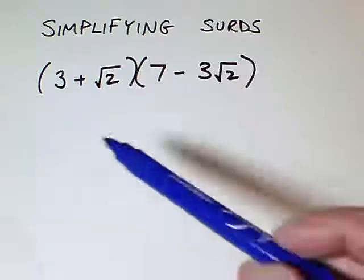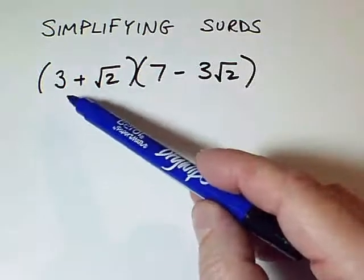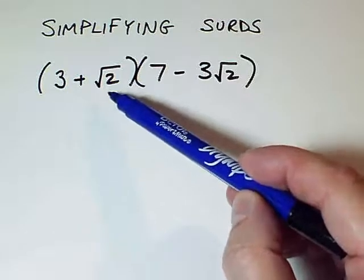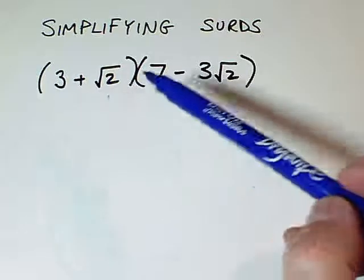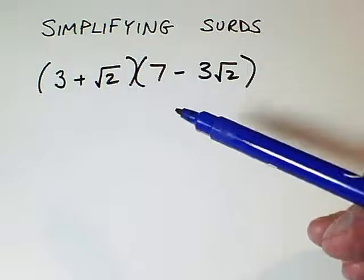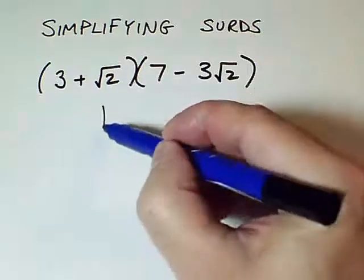Sometimes we have to deal with expressions where we've got whole numbers added to surds. Here we've got two expressions like that multiplied together, and we can multiply out in the normal way.